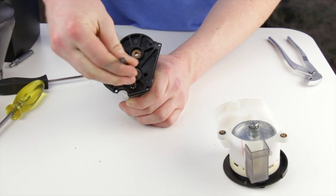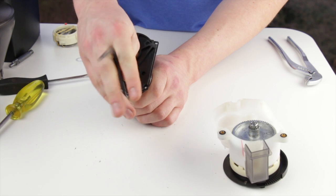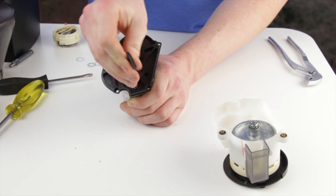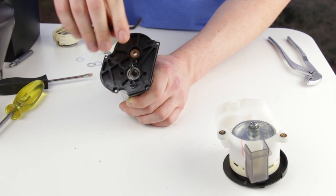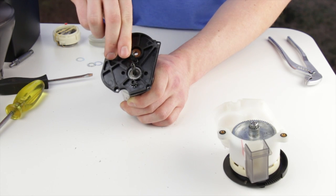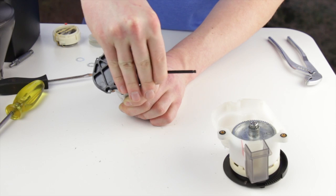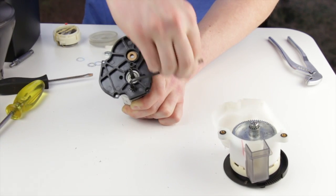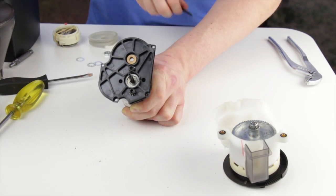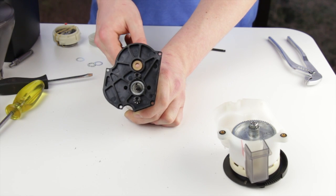Here's where we use our four millimeter hex key. Now we have the new motor plate installed. We can go ahead and set the motor to the side.